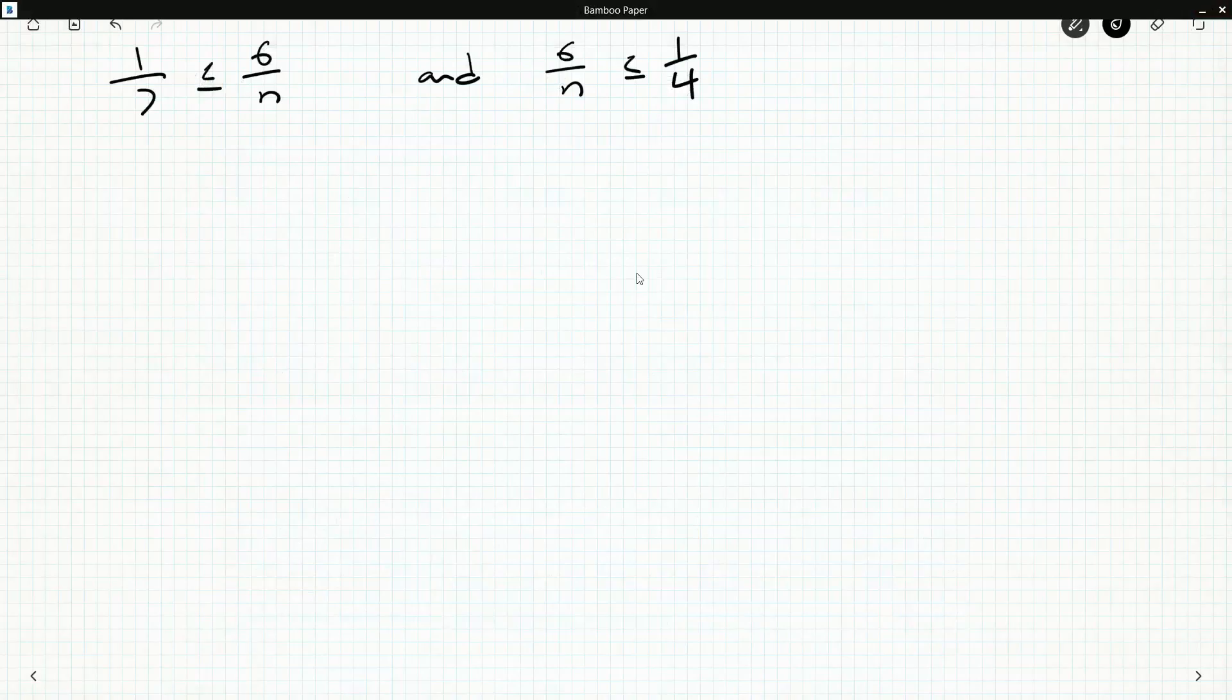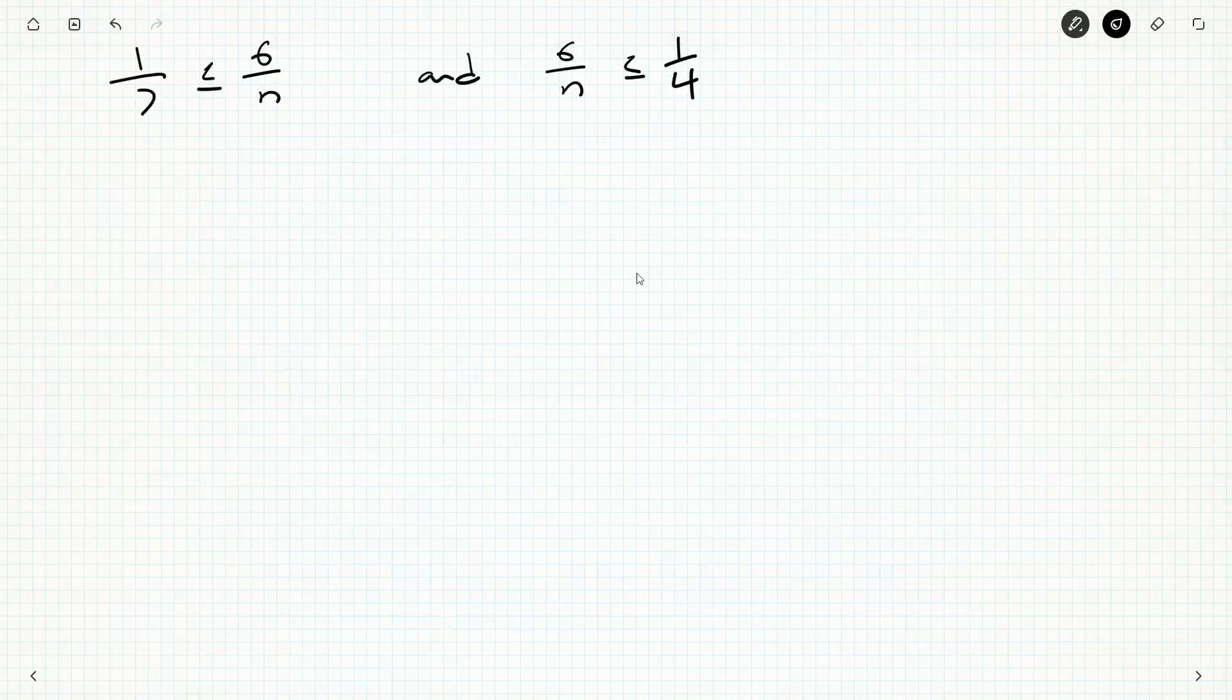This makes it really easy. Multiply, just cross multiply. Multiply by 7 on both sides and multiply by n on both sides. We'll get n is less than or equal to 42, and multiplying again, 24 less than or equal to n.